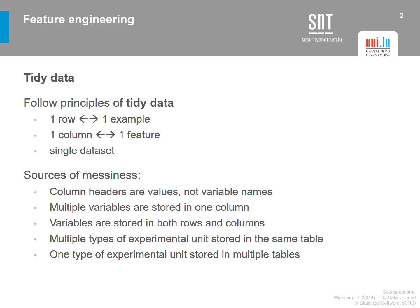Having features stored in both rows and columns is also a source of messiness. For example, storing multiple types of experimental units in the same table — similar to the temperature example — is problematic. It is preferable to have a single unit representing a feature rather than multiple.